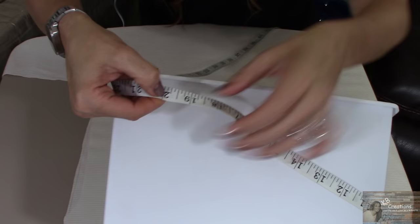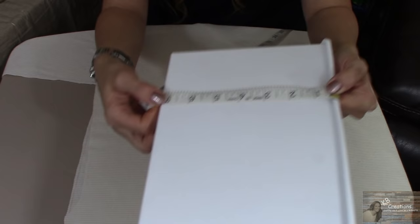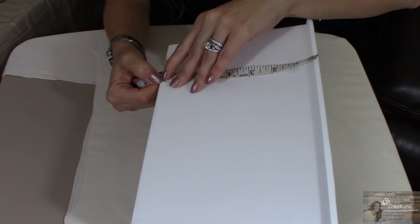Now I'm going to take and measure how tall the bin is. And it is measuring out at seven inches. So I am going to take that seven inches and I am going to add four inches to it, making it 11 inches.